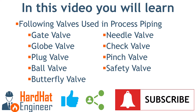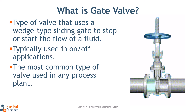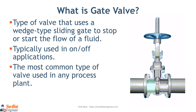Let's start with the video. What is a gate valve? A gate valve is a type of valve that uses a wedge-type sliding gate to stop or start the flow of a fluid. Gate valves are typically used in on-off applications. It is the most common type of valve used in any process plant.